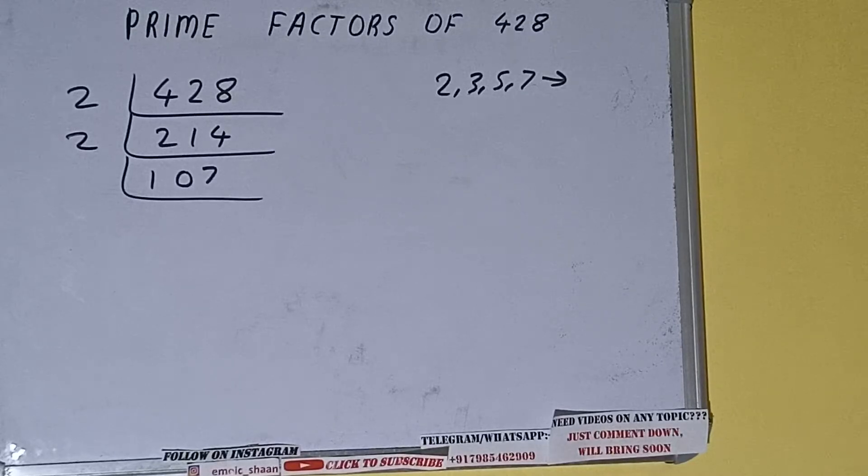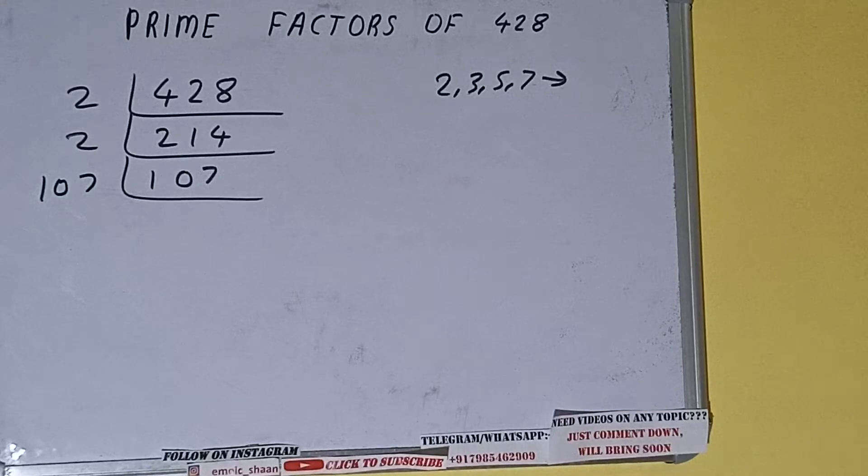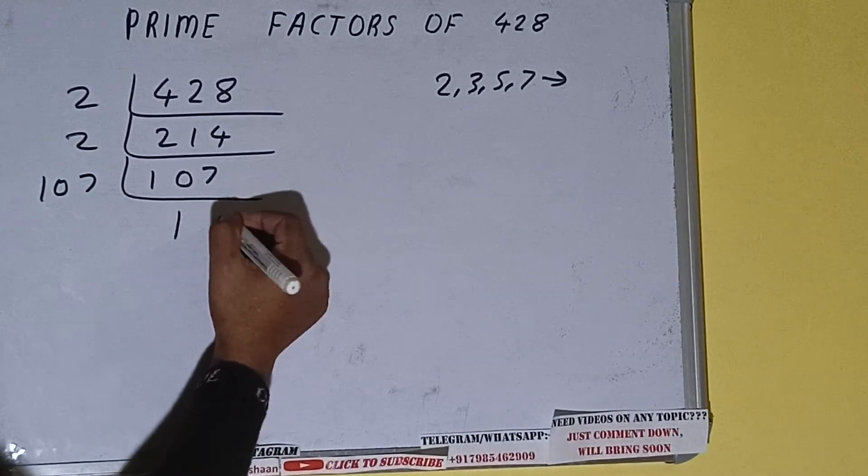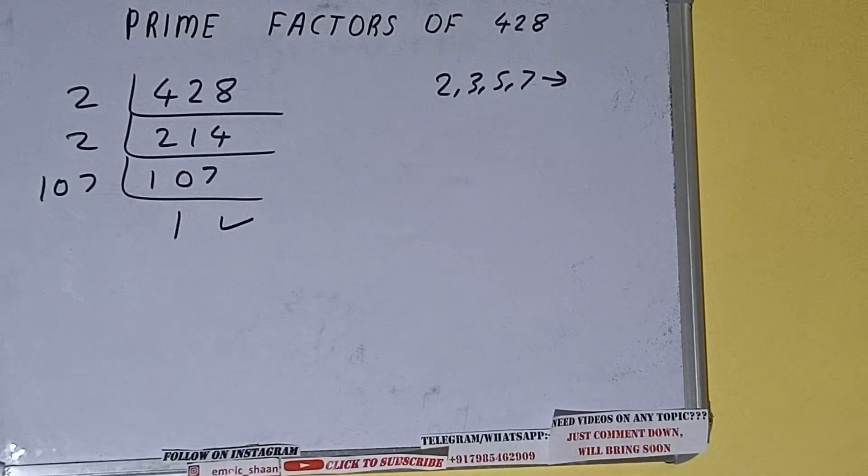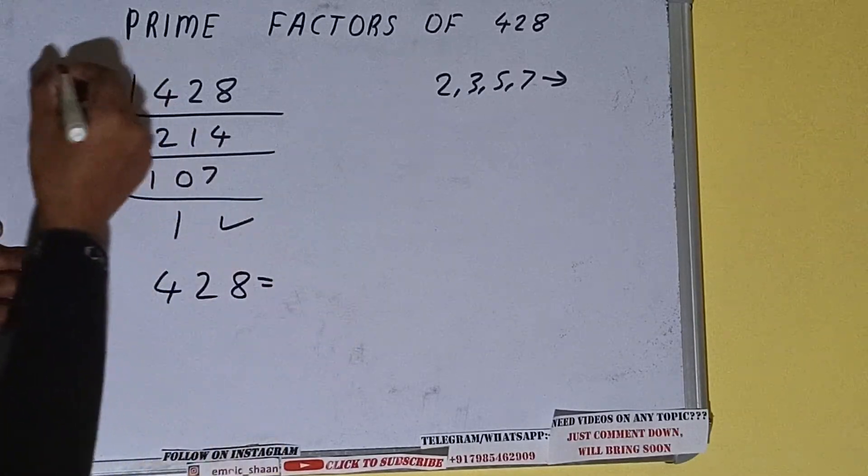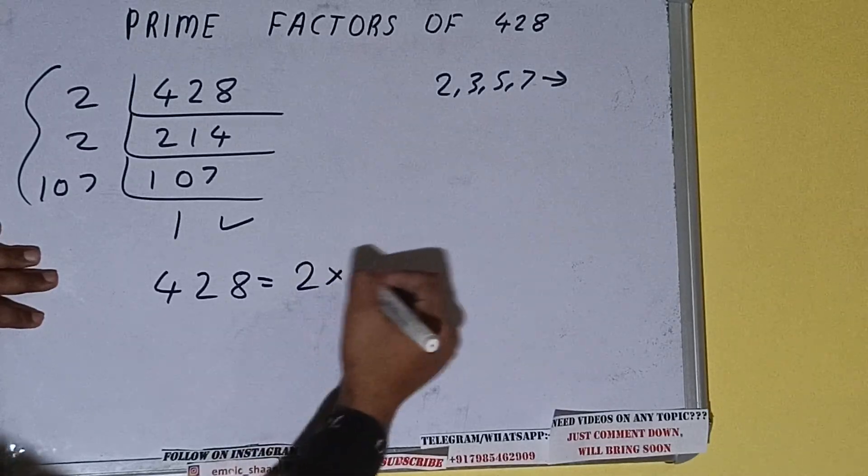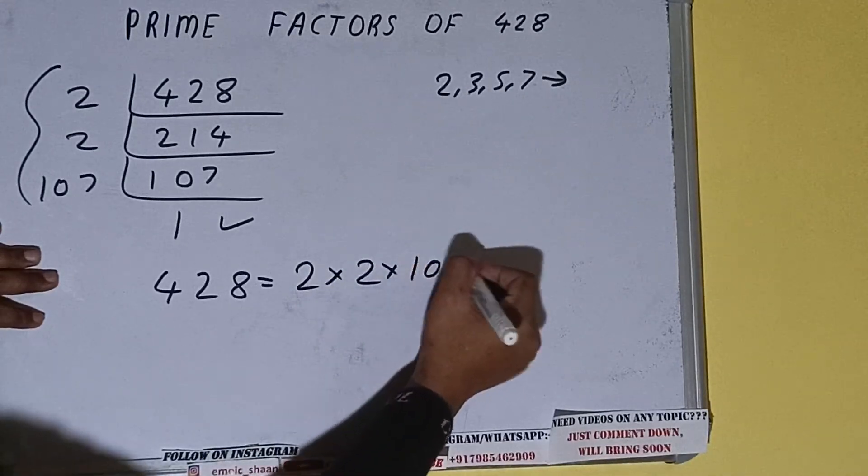So it is only divisible by itself, that is 107. And once we do so, we'll be getting 1. Once we get 1, we need to stop and do one last thing. That is, prime factors of 428 equals whatever we have on the left-hand side, that is 2 × 2 × 107.